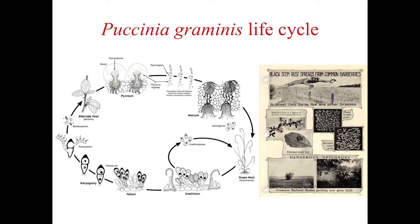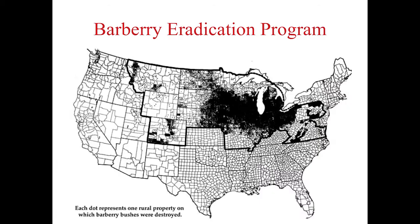For UG99 there are really two immediate options: fungicides and genetic resistance. Both can be very effective, but I'm going to talk about genetic resistance for the rest of the talk. That was the introduction to UG99, stem rust, and wheat. Now I'm going to talk about the scoreboard for 2017 — what's going on right now.